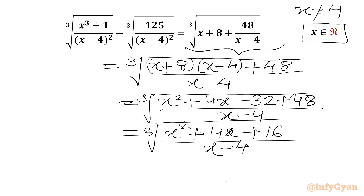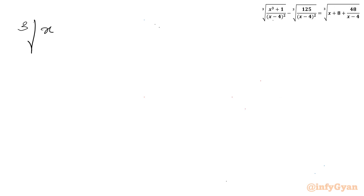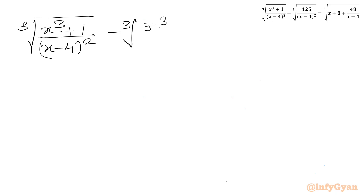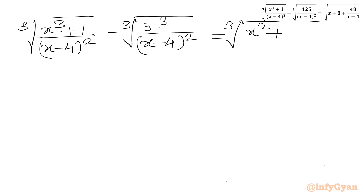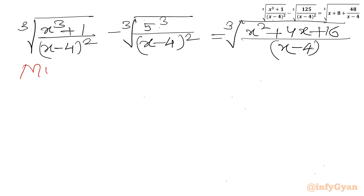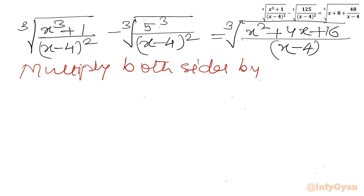Let us write our equation once. We have cube root of (x³ + 1) over (x minus 4) squared, minus cube root of 5³ over (x minus 4) squared, equal to cube root of (x² + 4x + 16) over (x minus 4). Now I will multiply both sides of our equation by cube root of (x minus 4) squared.